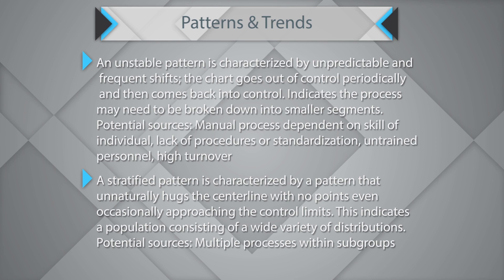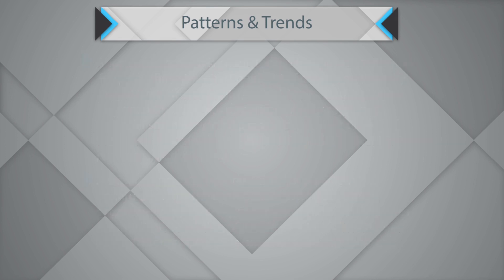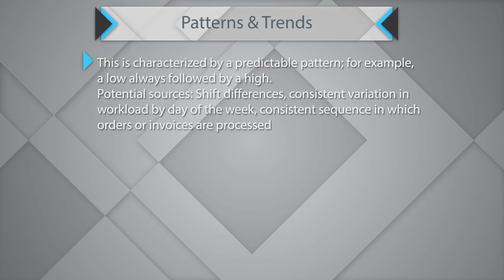The potential causes of a stratified pattern could be multiple processes that exist within the same subgroup. The next pattern is the systematic variable, characterized by a predictable pattern — for example, a low always followed by a high. Potential sources could be shift differences, consistent variation in workload by the day of the week, or a consistent sequence in which orders or invoices are processed.